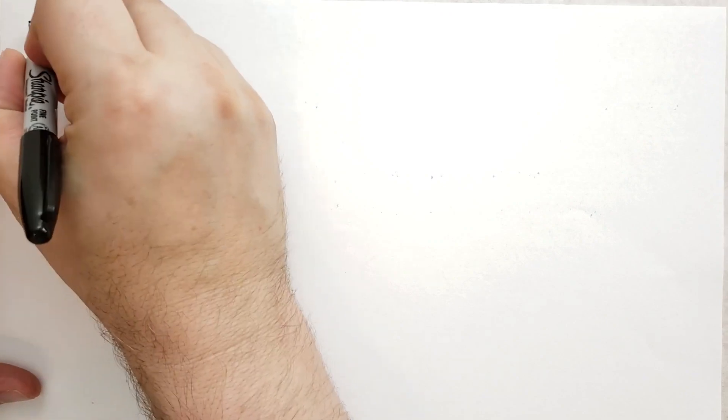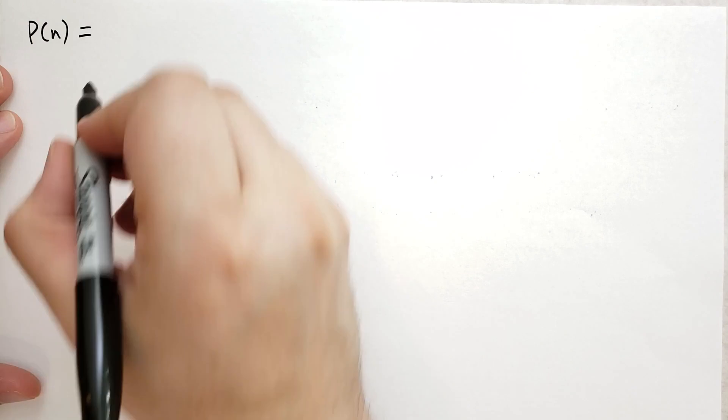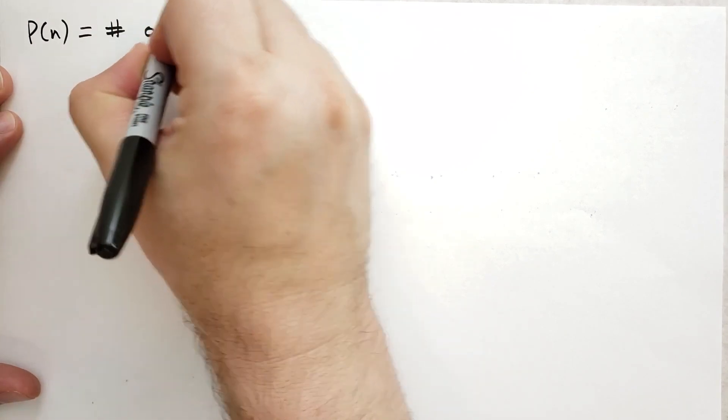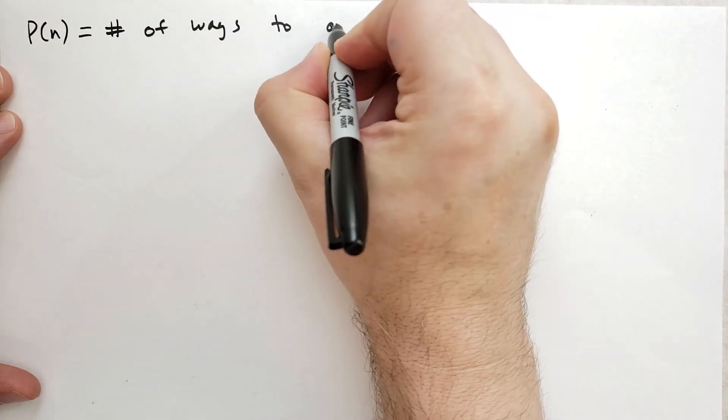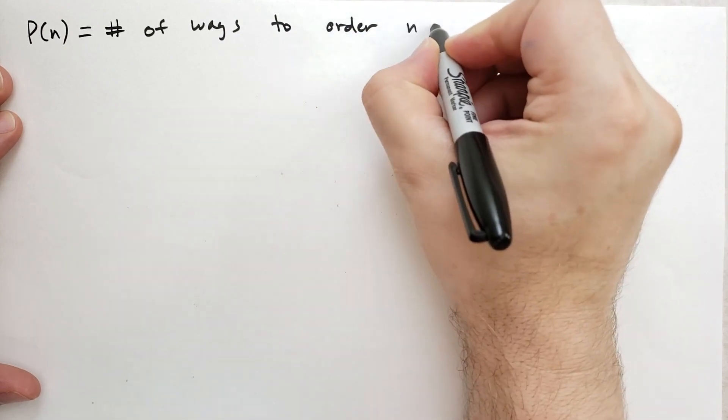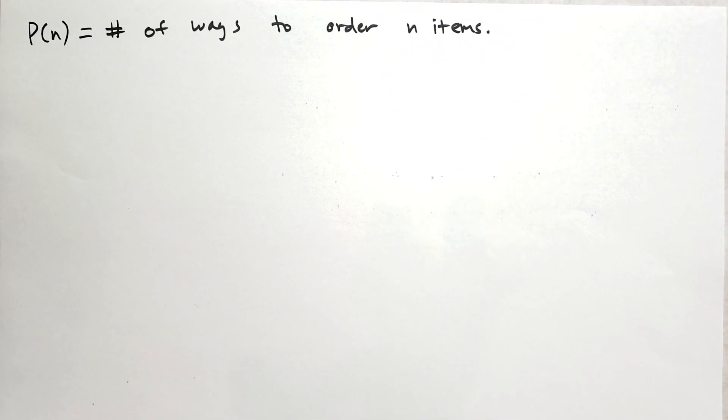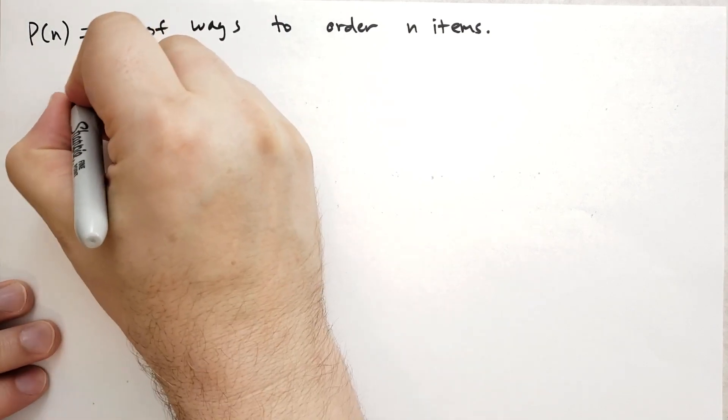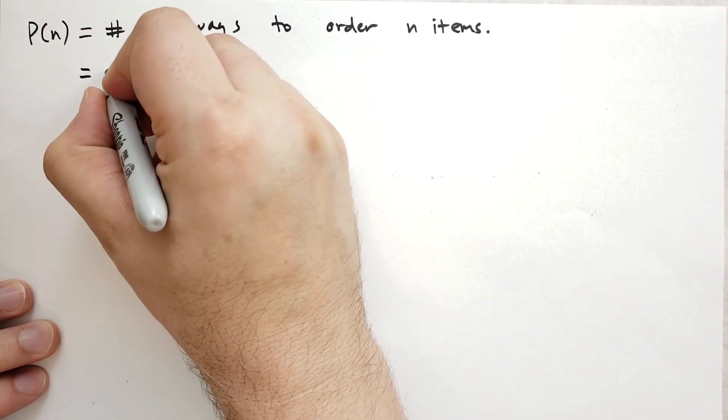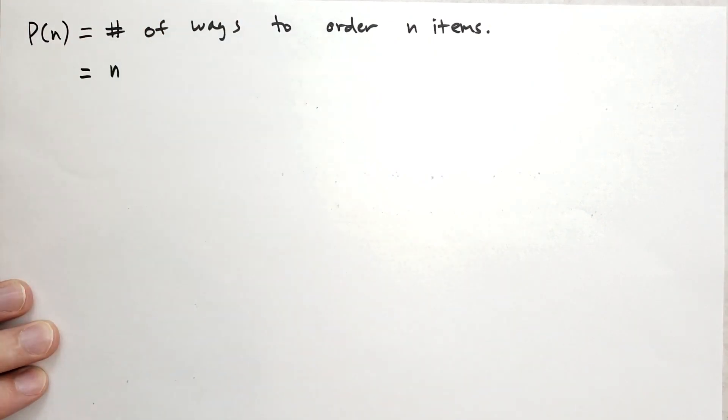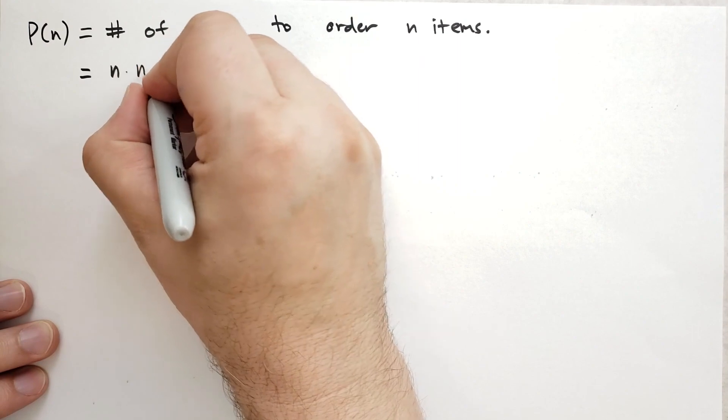So the first thing I want to talk about is I'm going to make this function called P of N. And what this function represents, it's the number of ways to order N items. So like P of three, if you had three coins, three different coins that are distinct, and you wanted to count the number of ways you can organize those three coins, well, for the first possible coin, the first possible choice could be any of N options.